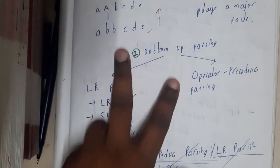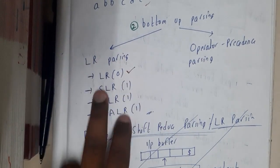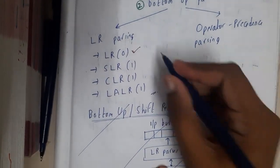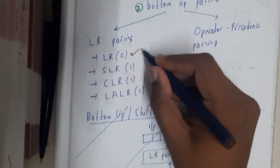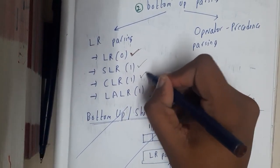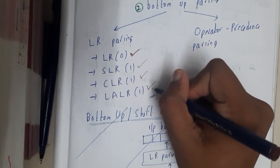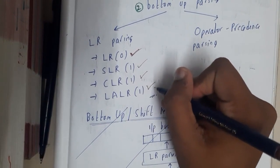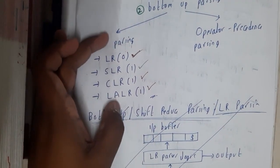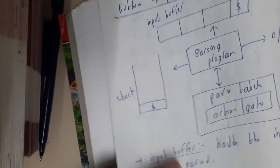Bottom-up parsers are divided into two types: LR parsing and operator precedence parsing. LR parsing is divided into four categories: LR0, SLR (Simple LR), CLR (Canonical LR), and LALR (Look Ahead LR). We'll be discussing each parser in detail, so don't worry.